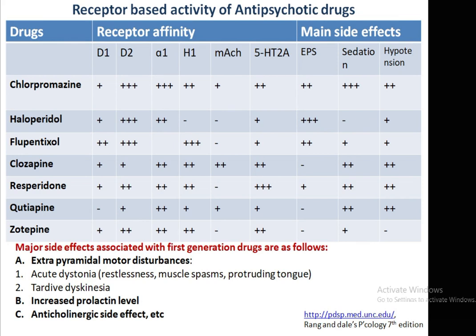Moving to the receptor-based activity of antipsychotic drugs, which is the main part of pharmacology. Chlorpromazine acts on different receptor types: D1, D2, alpha-1, H1, muscarinic, and 5-HT2 receptors. A positive sign indicates higher affinity towards a specific receptor. Chlorpromazine has higher affinity towards D2, alpha-1, and 5-HT2A receptors. As a result, the main side effects associated with chlorpromazine are extrapyramidal symptoms (EPS), sedation, and hypotension.